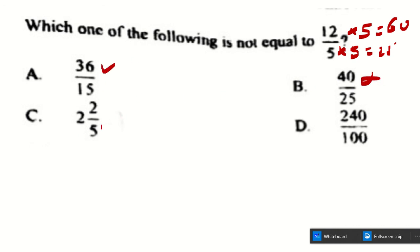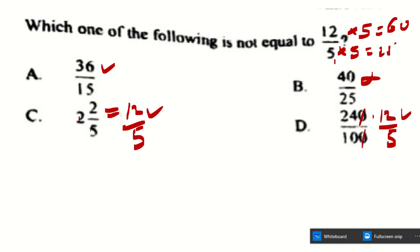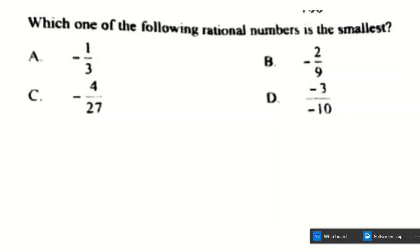For choice C, the mixed fraction converts to improper: 2 times 5 plus 2 equals 12, giving 12 over 5, which matches. For choice D, 24 over 10 simplifies by 2: 24 divided by 2 is 12 and 10 divided by 2 is 5, giving 12 over 5 — the same as the original. So the answer is B, which is not equivalent.